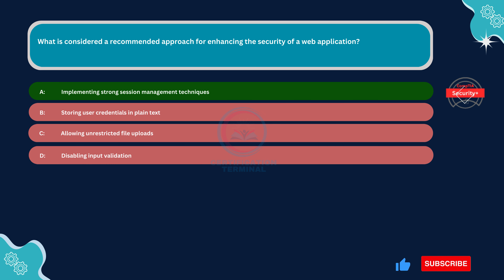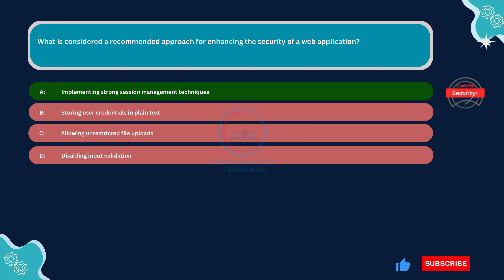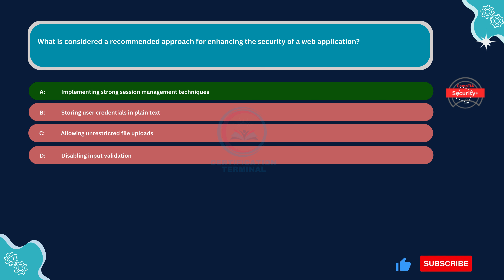Option D, disabling input validation, is incorrect. Disabling input validation removes an essential layer of defense against common web application security threats such as injection attacks, including SQL injection and cross-site scripting. Input validation helps ensure that user-provided data is properly sanitized and conforms to expected formats, reducing the risk of injection attacks and other vulnerabilities. Disabling it weakens the application's resilience to attacks.